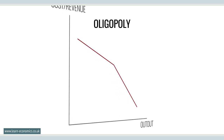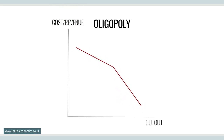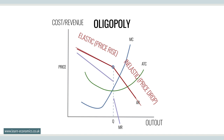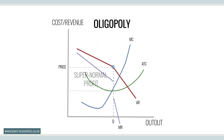The oligopolist faces two demand scenarios: firstly, when demand is elastic to a price increase, and secondly, when demand is inelastic to a price drop. Profit maximization occurs where MC cuts MR, which is the vertical section between A and B. The level of profit depends upon the position of the ATC curve.